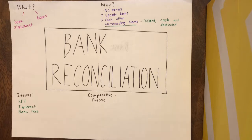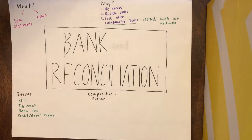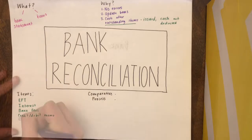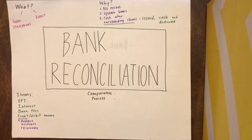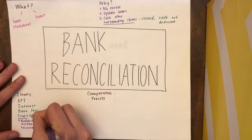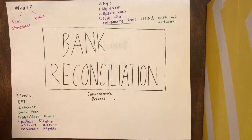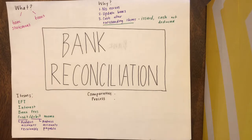Another item that could affect bank reconciliation is a credit or a debit memo. A credit memo is a transaction that reduces accounts receivable, and a debit memo would be the opposite — a transaction that reduces accounts payable. One example of a debit memo is a service fee, where the bank fee expense is debited and cash is credited.